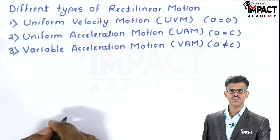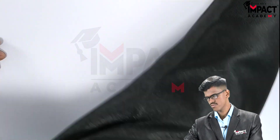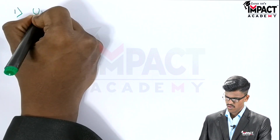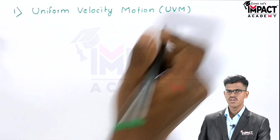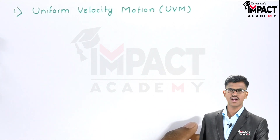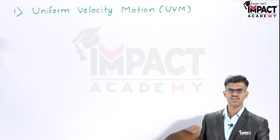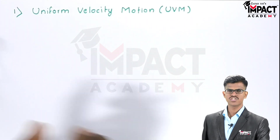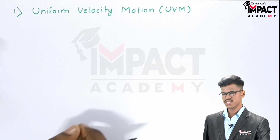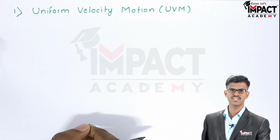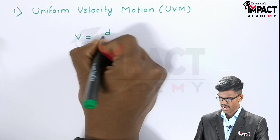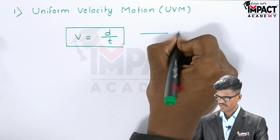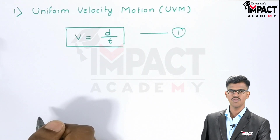In uniform velocity motion, the speed of the particle is constant. It travels a constant distance in a particular time. For example, if a vehicle travels a distance d with velocity v in time t, then the formula becomes v is equal to d by t. This is our first formula of uniform velocity motion.